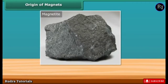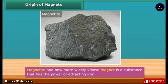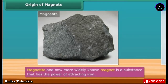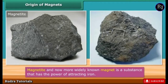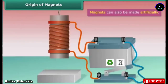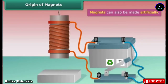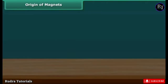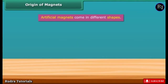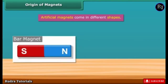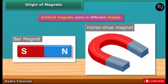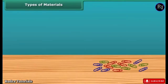In the later days, magnetite was more widely known as a magnet. A magnet is a substance that has the power of attracting iron. Magnets can also be made artificially; however, the process of making artificial magnets is a recent discovery. Artificial magnets come in different shapes, for example, bar magnet, horseshoe magnet, etc.